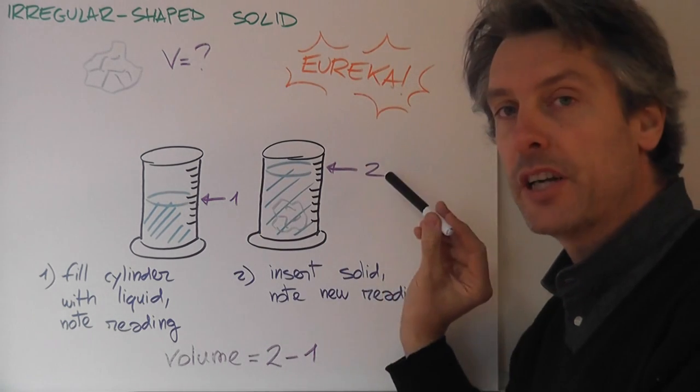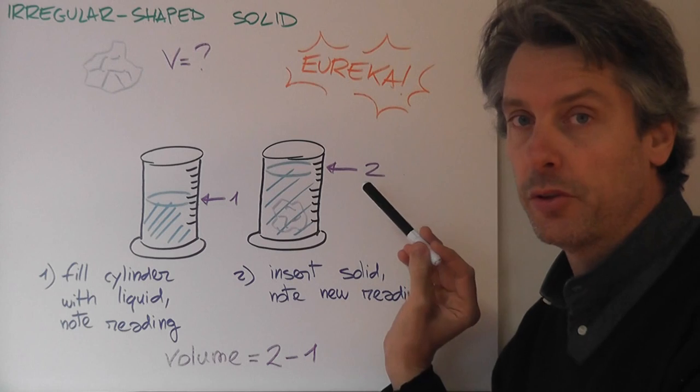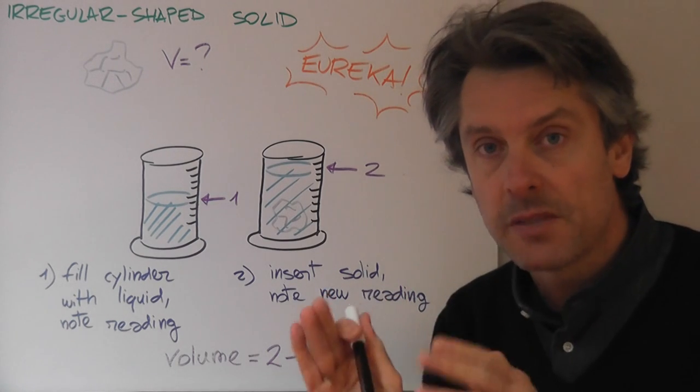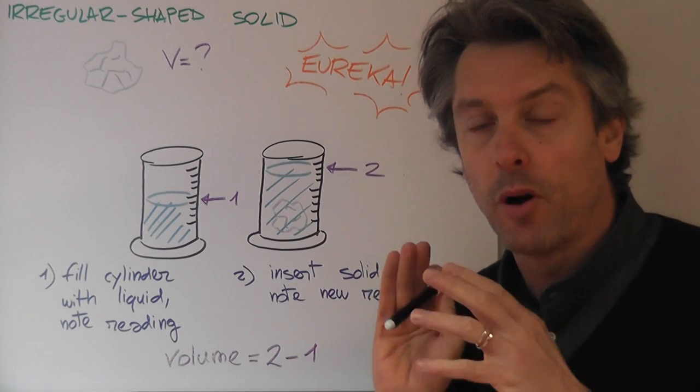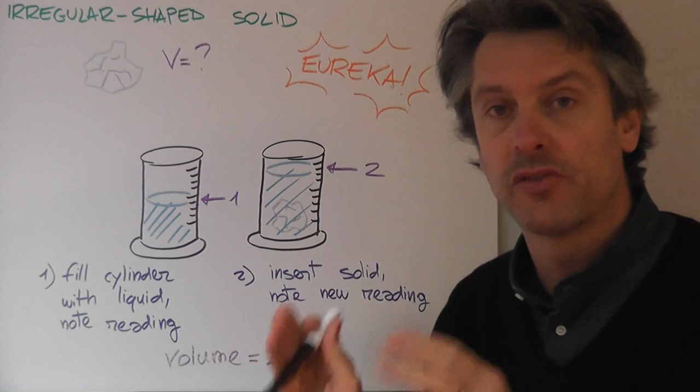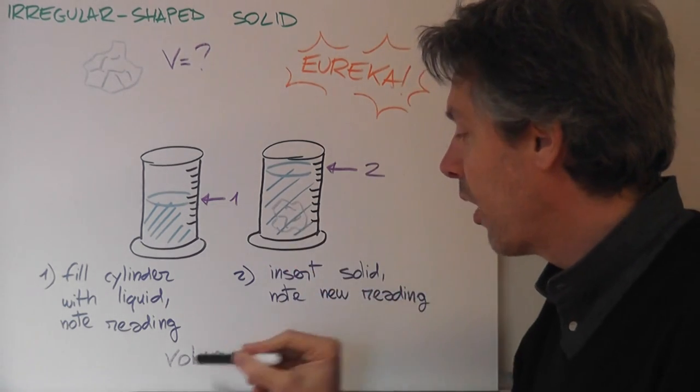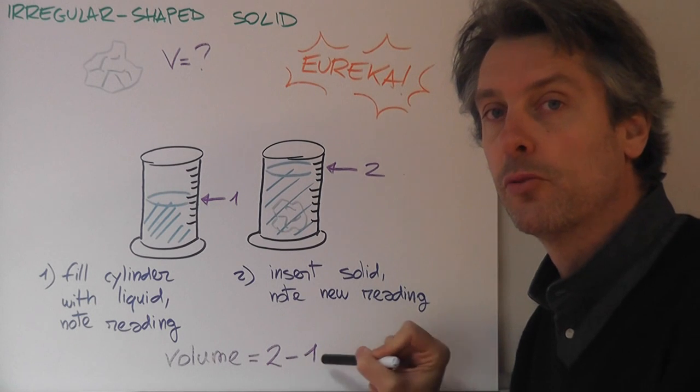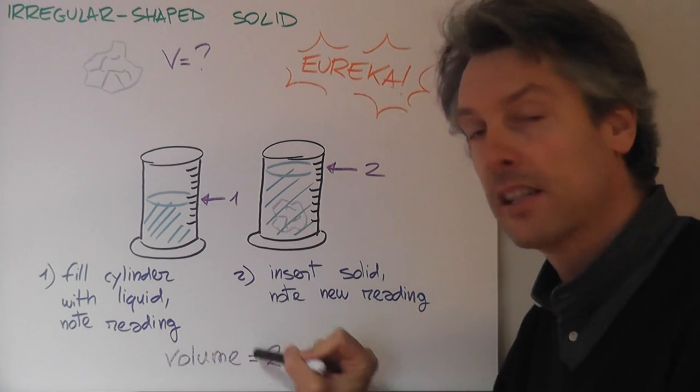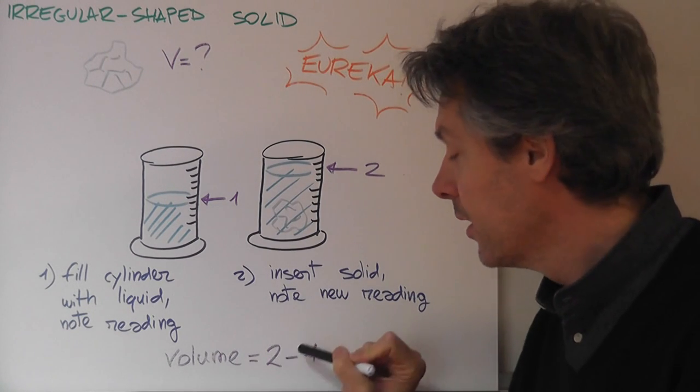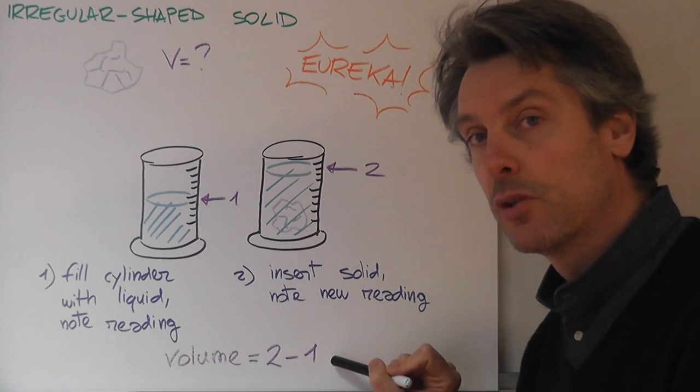So, you take the new reading, which I call two. And, obviously, at this point, the volume of your solid is just the difference between the second reading and the first one. So, as I summarized, is two minus one. Where two, I mean, second reading minus first reading.